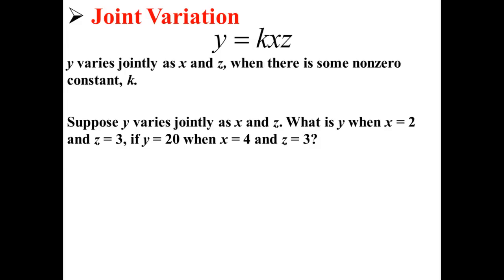Suppose y varies jointly as x and z. What is y when x is equal to 2 and z is equal to 3 if y is 20 when x equals 4 and z equals 3?